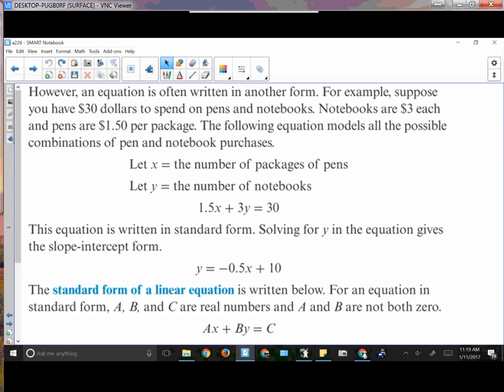So make sure that you get into your books this right down here, because this is what standard form looks like: A, B, and C are always going to be real numbers. That means they can be decimals, they can be fractions, positive or negative. For example, suppose I got $30 to spend on pens and notebooks. Notebooks are $3 each, pens are $1.50 per package.